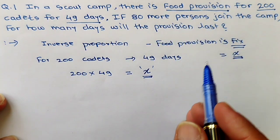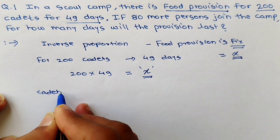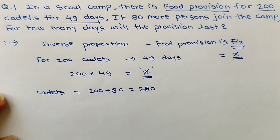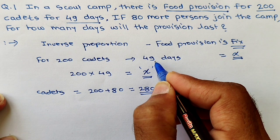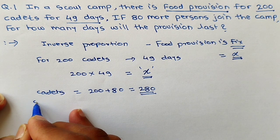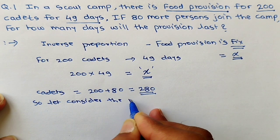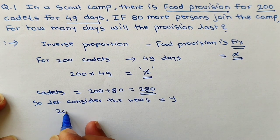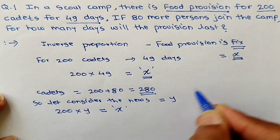In the next condition, 80 more persons join, so the new number of cadets will be 200 plus 80, which is 280. Since cadets are increased, the number of days will decrease. Let the new number of days be y. As per the inverse proportion condition, number of cadets into number of days must remain fixed and equal to x.